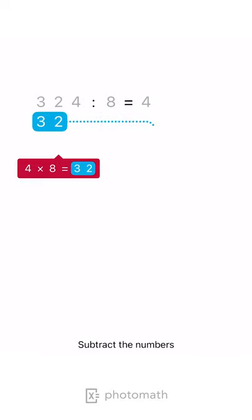Multiply that result by 8. Write the product under the number we initially divided. Subtract the numbers.